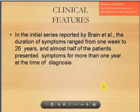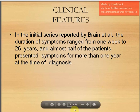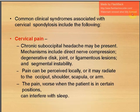In the initial series reported by Brain et al., the duration of symptoms ranged from one week to many years, and almost half of patients presented symptoms for more than one year at diagnosis. Common clinical syndromes include cervical pain — mainly suboccipital headache — from direct nerve compression, degenerative disc, joint, ligamentous lesions, and segmental instability. Pain can be perceived locally or radiate to the occiput, shoulder, scapula, or arms, and worsens in certain positions, interfering with sleep.